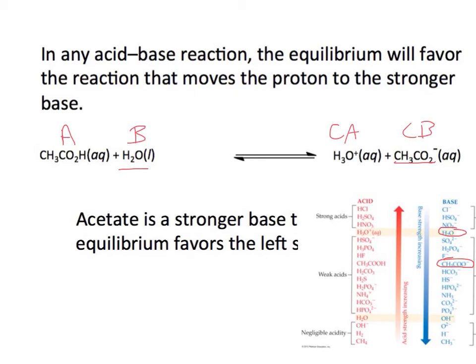So the reverse reaction will be favored more than the forward reaction because our conjugate base is much stronger than our base in the forward reaction. Since acetate is stronger, we see that equilibrium will lie to the left side.